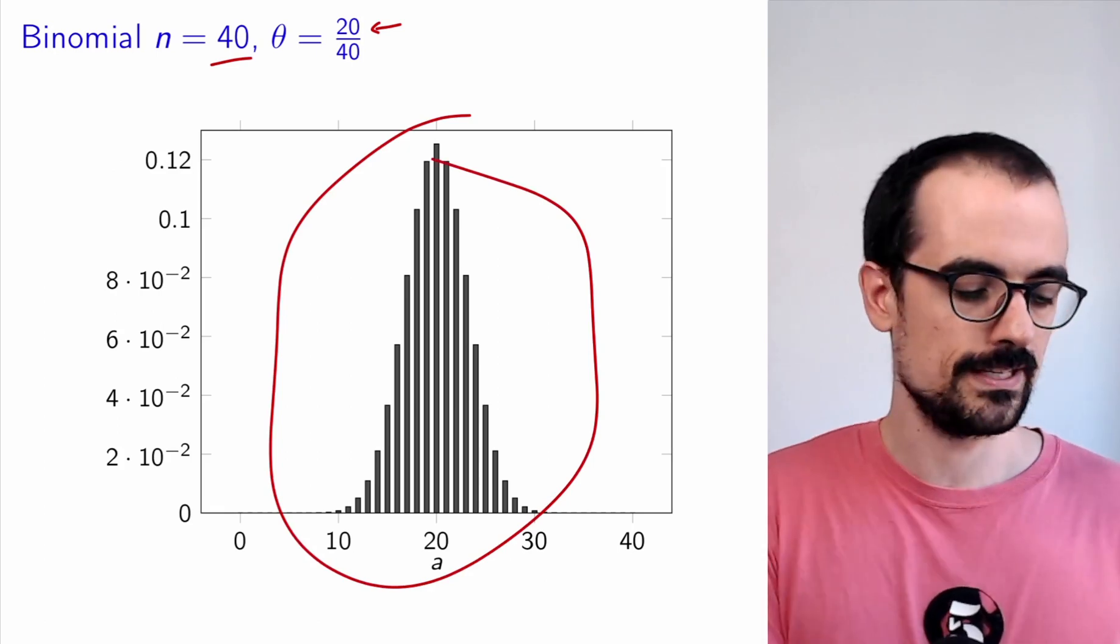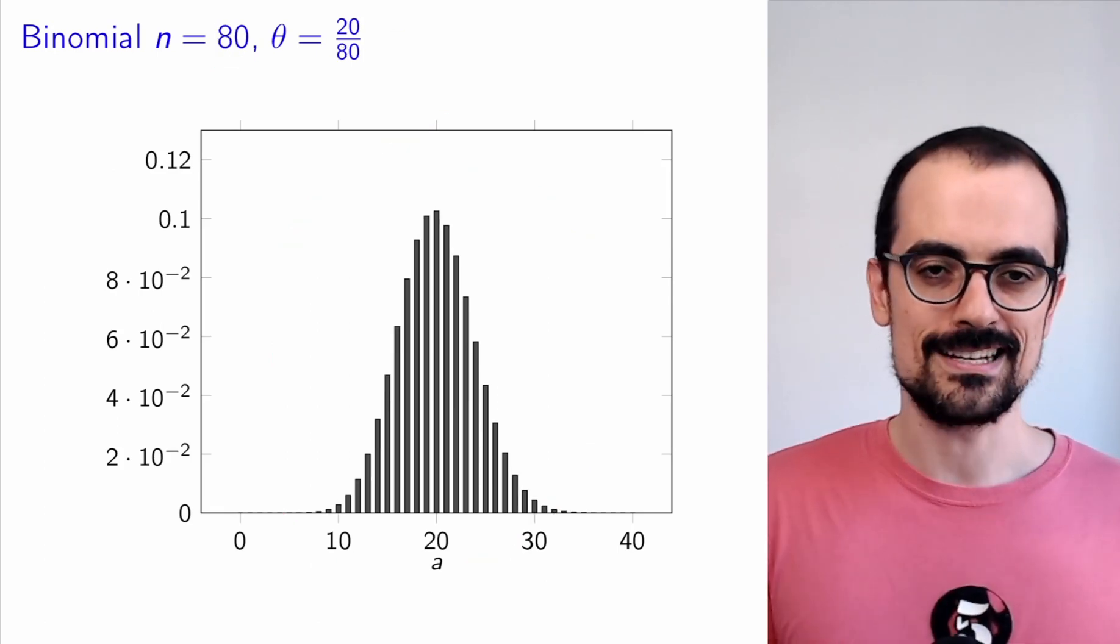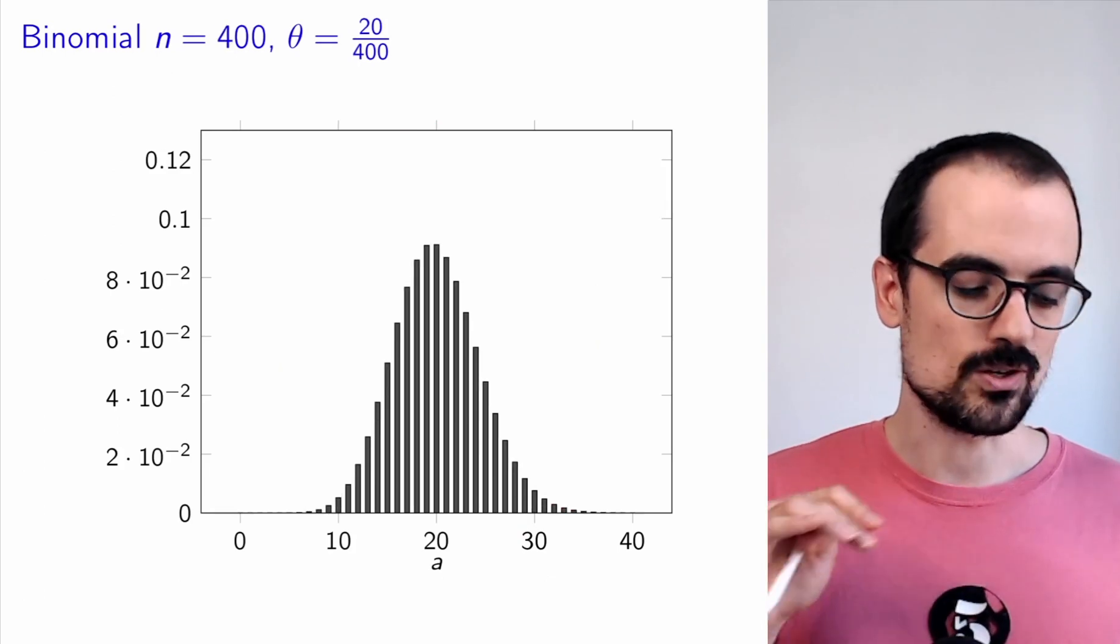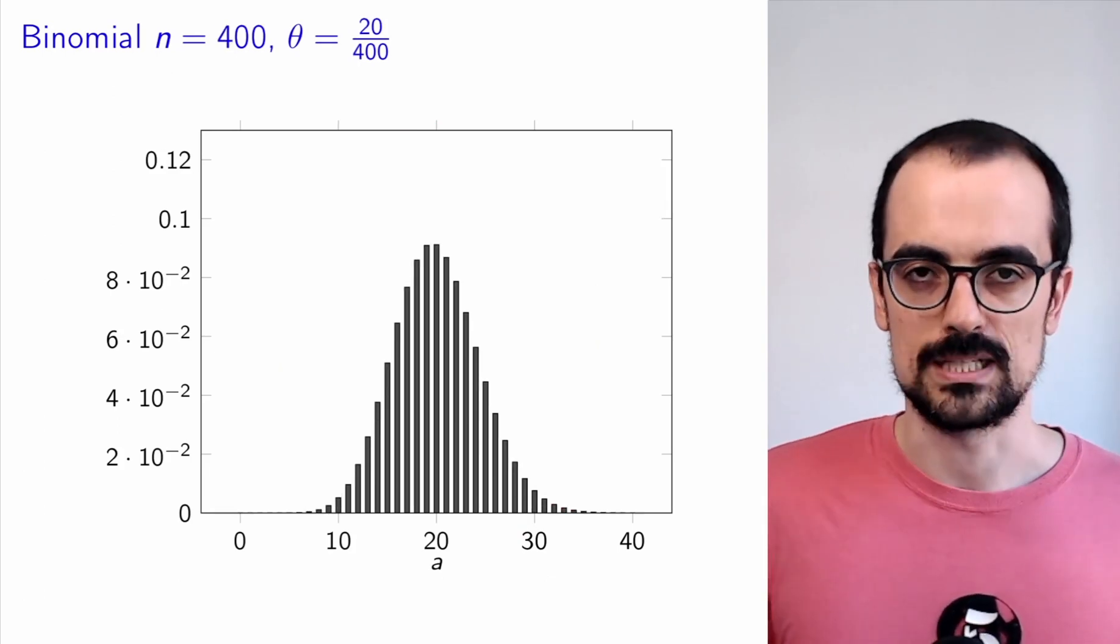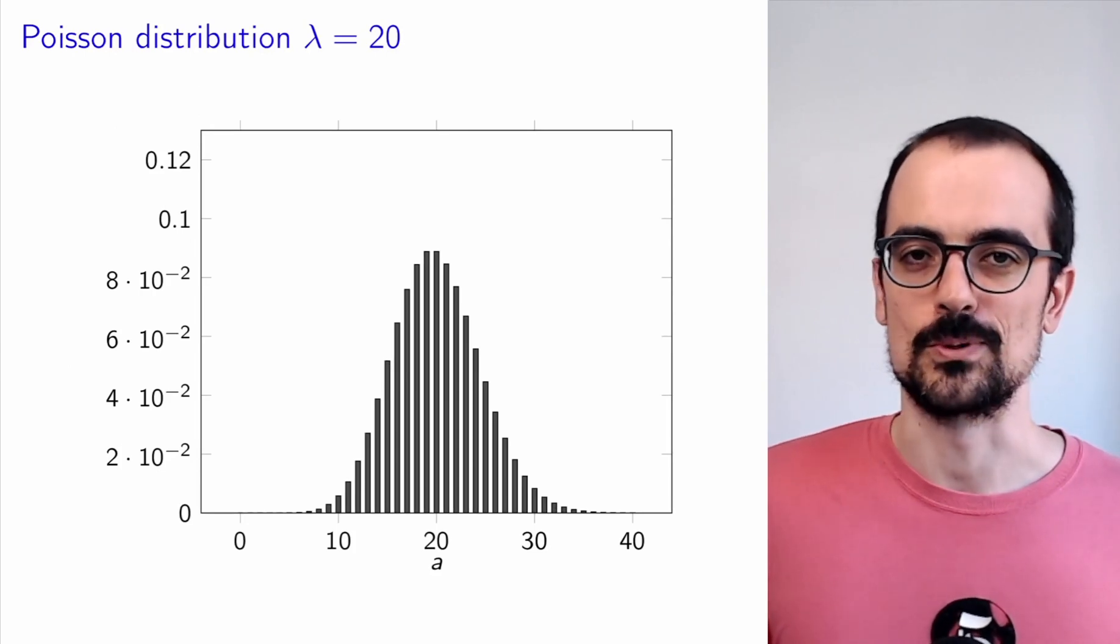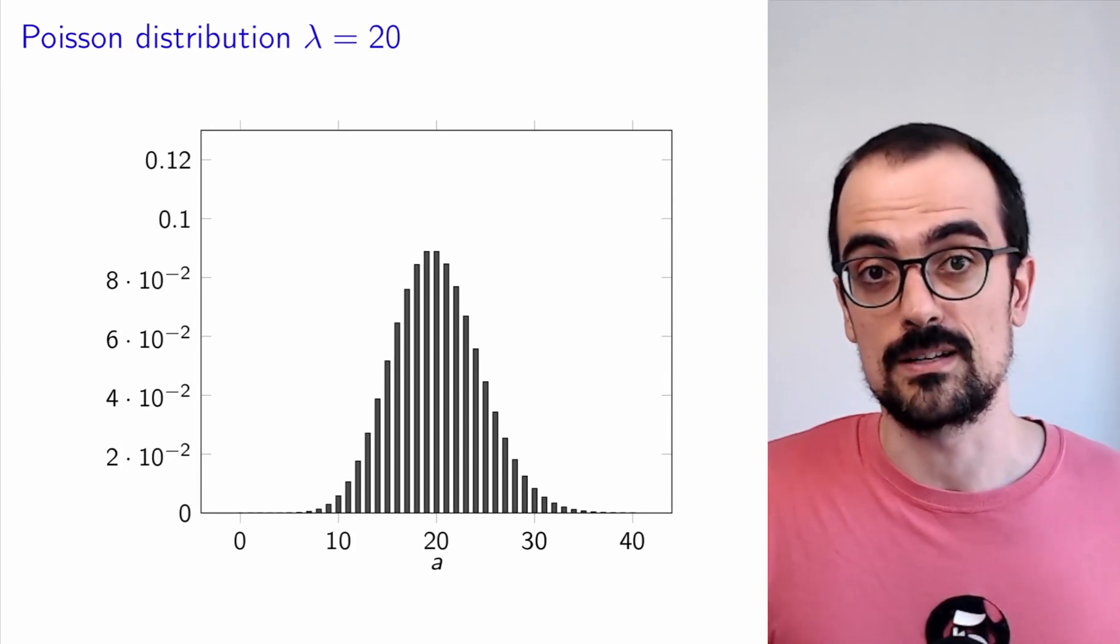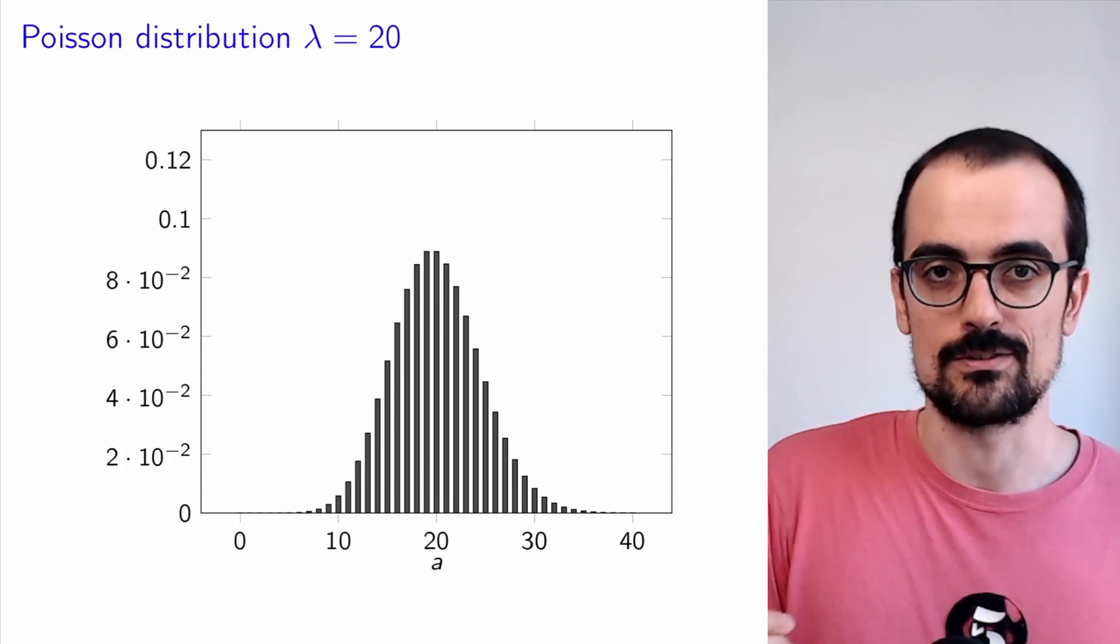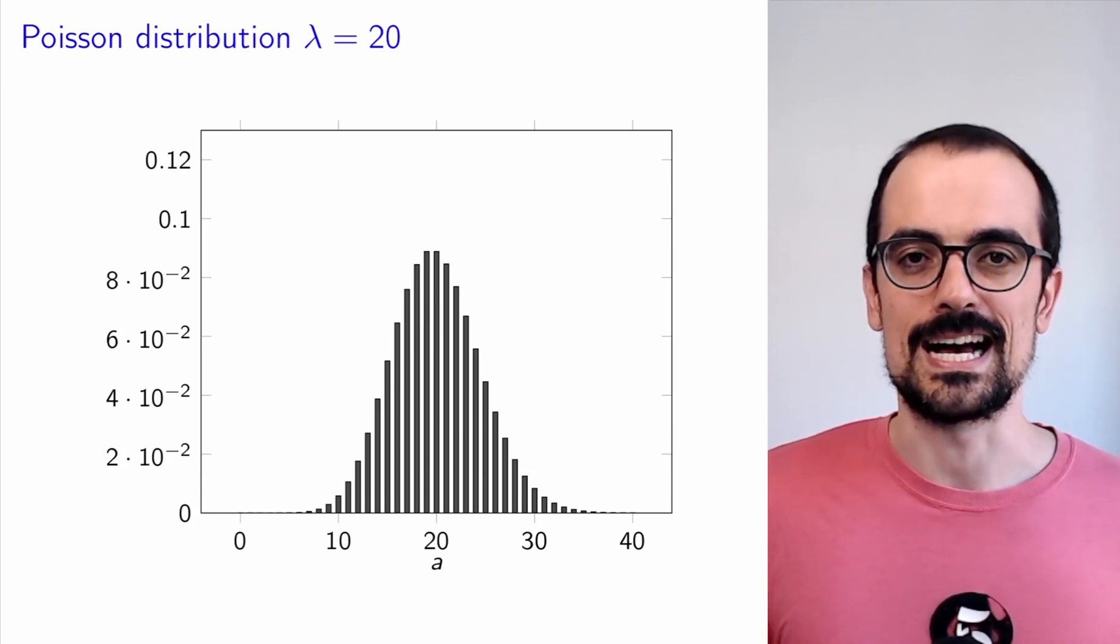What we see is that indeed this converges very fast to something that is essentially the same as a Poisson with lambda equals 20. So we observe this numerically. It's always a good idea to check numerically that whatever you're proving mathematically actually holds.